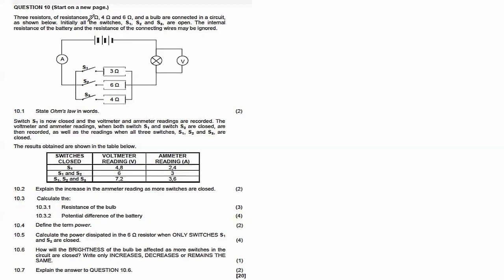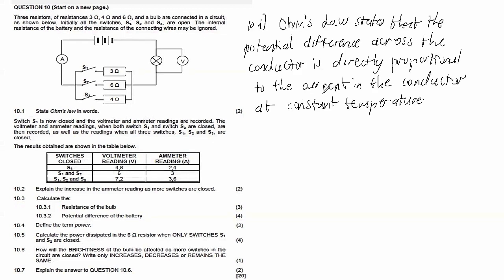Question 10 says three resistors of resistance 3Ω, 4Ω, and 6Ω and a bulb are connected in a circuit as shown below. Initially all switches S1, S2, and S3 are open. The internal resistance of the battery and the resistance of the connecting wires may be ignored. They say: state Ohm's Law. Ohm's Law states that the potential difference across a conductor is directly proportional to the current in the conductor at constant temperature.